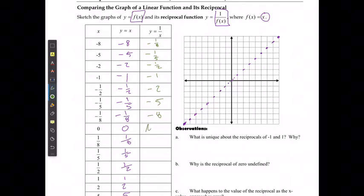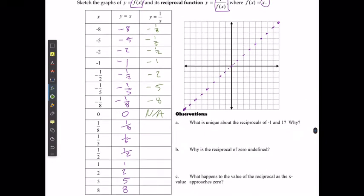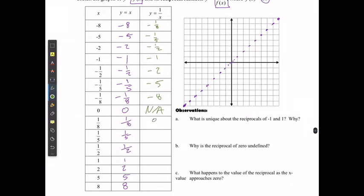This one just gives me an error when I put it into my calculator because I can't divide by 0. Then 8, 5, 2, 1, 1 over 2, 1 over 5, and 1 over 8.